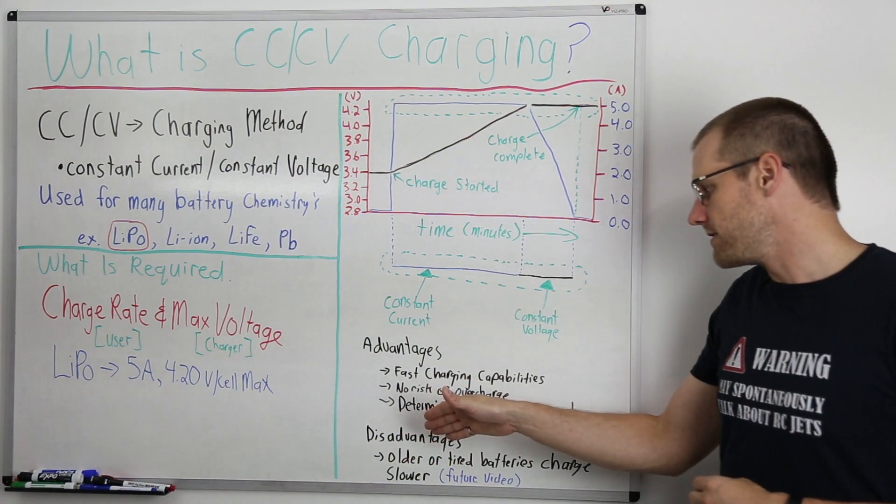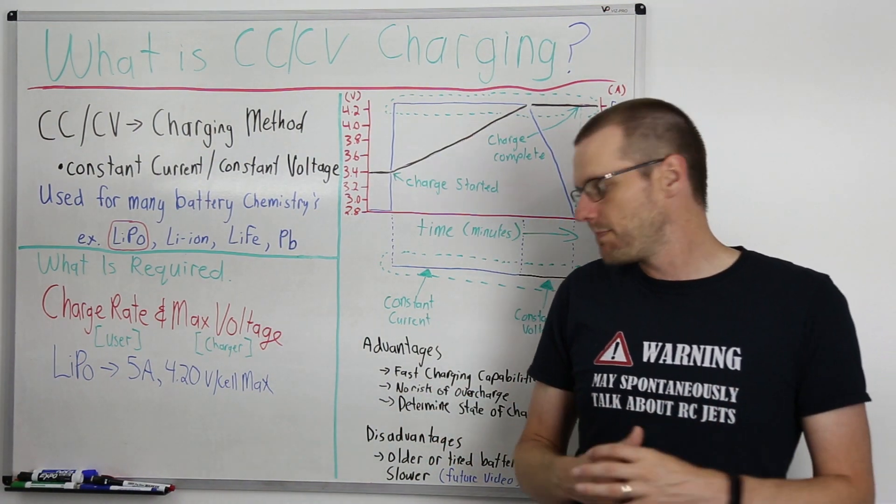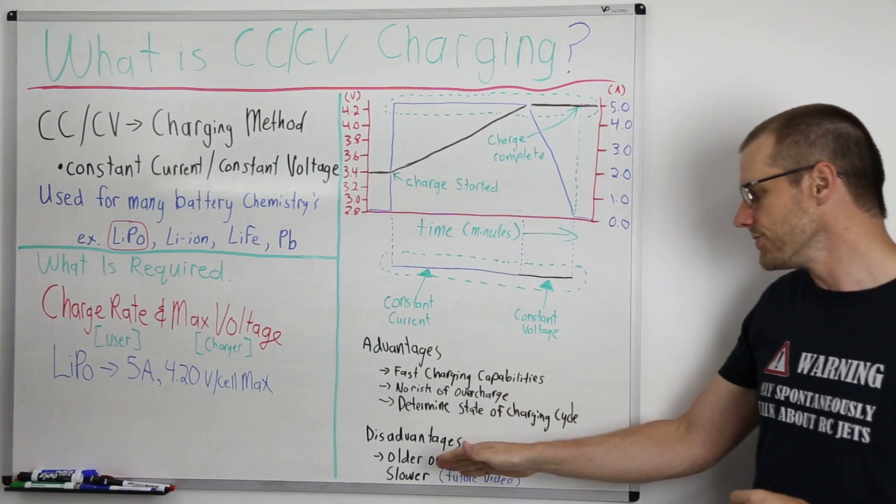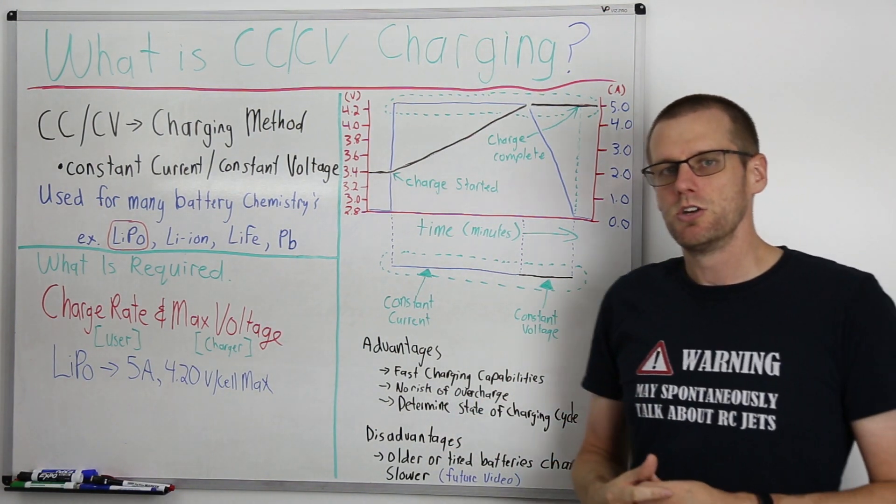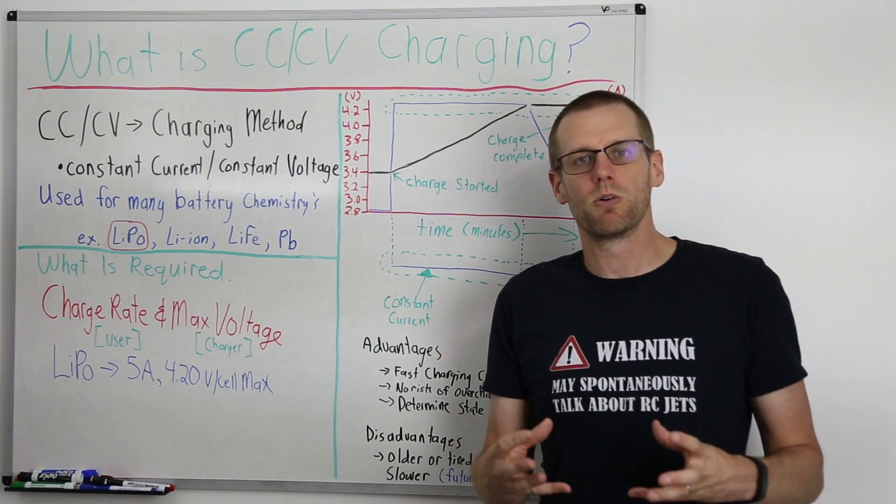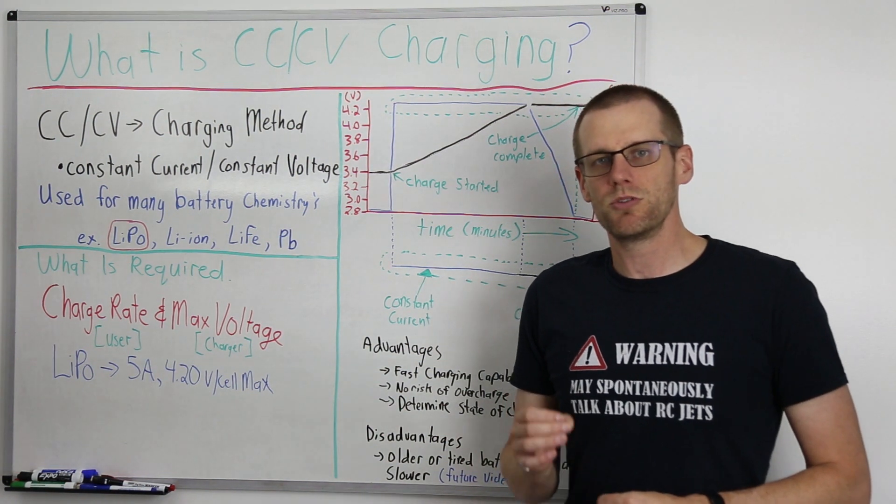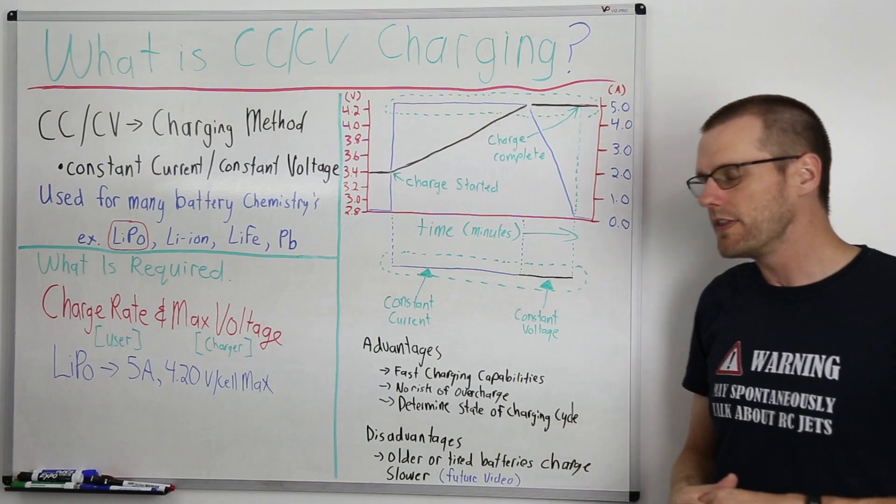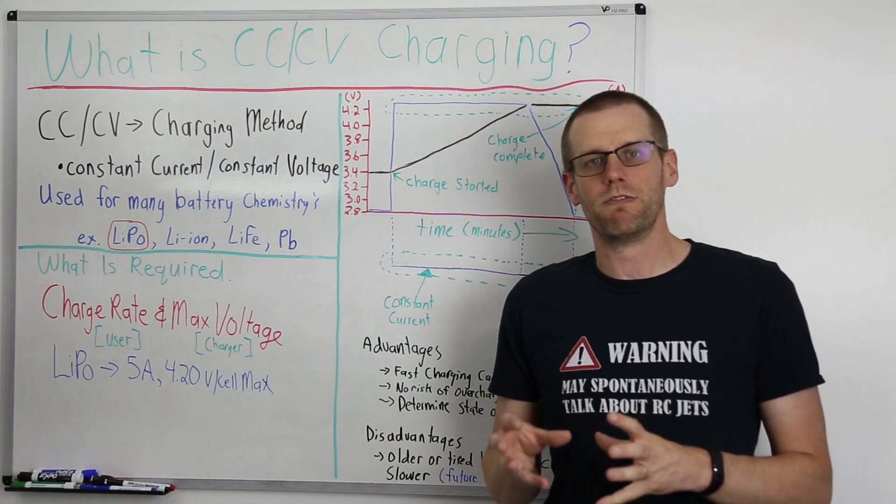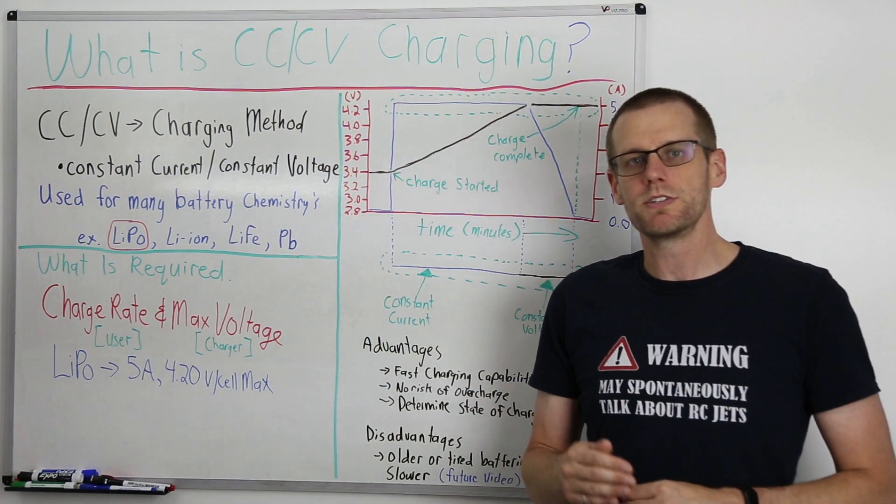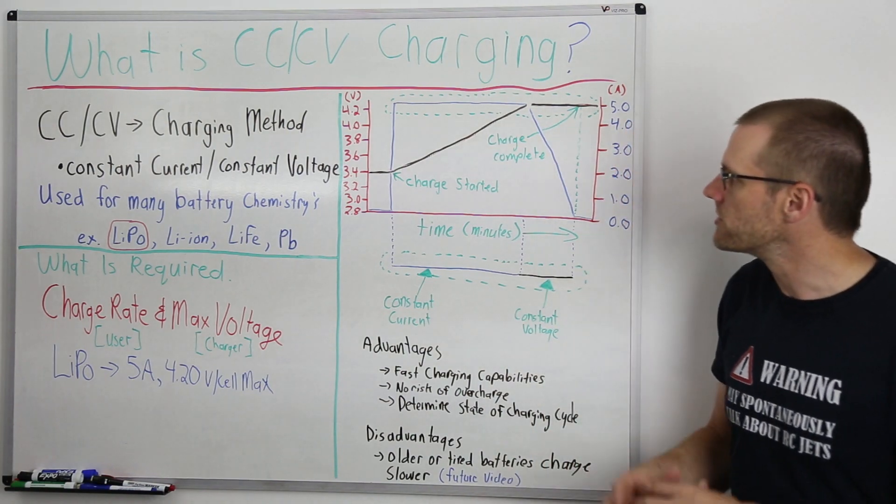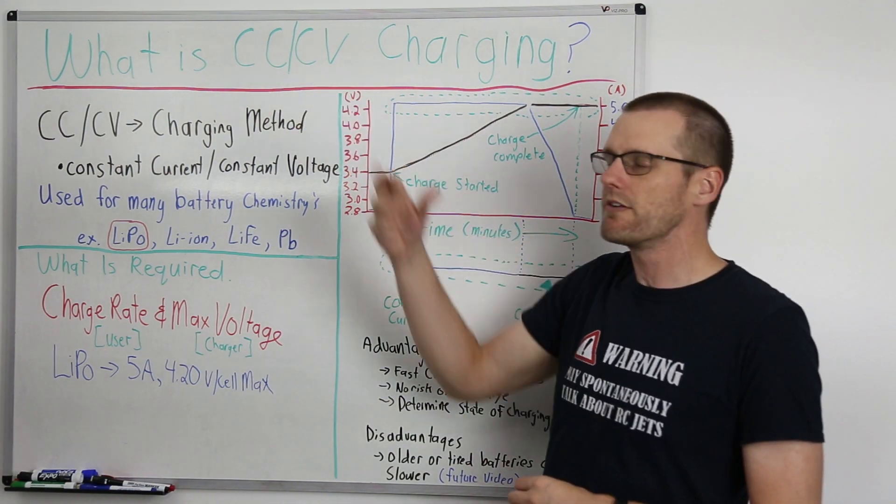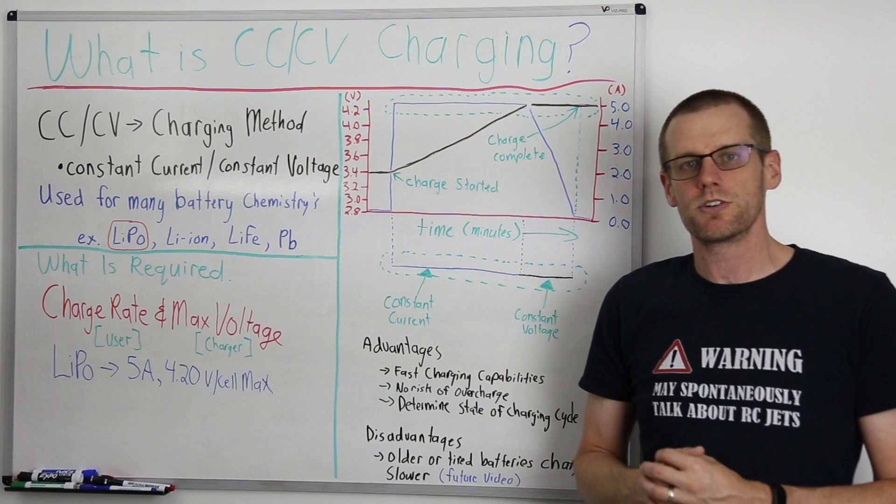Now let's take a look at some disadvantage here that we have written up on the board. Simply put, older or tired batteries do end up charging slower. Now I'm not going to get into the specifics of that within this video. I am going to save a further discussion on this for a future video. That pretty well covers everything that I wanted to talk about to simply introduce the idea of CC/CV charging methods.